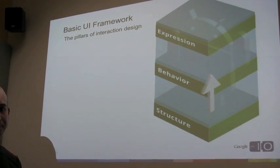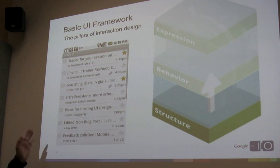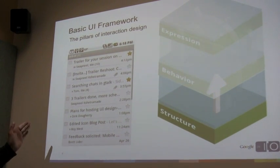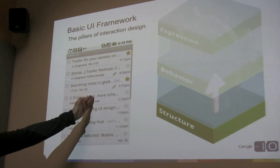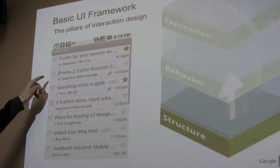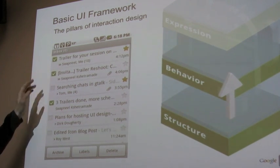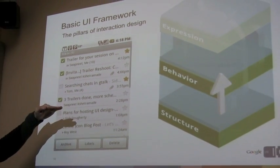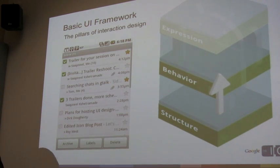Let's take a look at an example. Here in the new Gmail, the structure is fairly established where you can see that you can select a message, view that message, or star it. If I actually choose to select a message, the behavior that's associated with that, by tapping the checkbox, is a button bar that comes up from the bottom that allows the user the ability to archive, label, or delete the messages they have chosen.